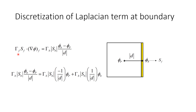The discretization term is gamma_f times S_f dot grad(phi_f). After doing the dot product, since we are on a boundary, we get gamma_b times magnitude(S_b) times (phi_b minus phi_p) divided by magnitude(d). According to fixed value, we already have the value of phi_b explicitly. Rearranging, the phi_p term has coefficient minus 1 over magnitude(d), and the known term is (1/d) times phi_b.